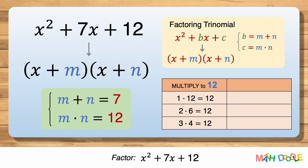Now let's see which of these combinations adds to 7. 1 plus 12 is 13, so 1 and 12 do not add to 7. 2 plus 6 is 8, so 2 and 6 do not add to 7. Now, 3 plus 4 is 7, so 3 and 4 not only multiply to 12 but also add to 7.